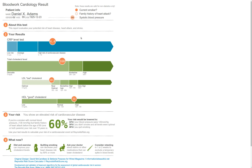That brings me to one more important feature we built in: the ability to run simple simulations. For example, if we were having a conversation about how quitting smoking and getting your blood pressure under control might improve your risk, I might say: right now you've got a 60% chance of having a heart attack or stroke in the next 10 years, but if you quit smoking and get your blood pressure even modestly into the pre-hypertensive range, you can cut your risk down from 60% to 30% — cutting it in half.